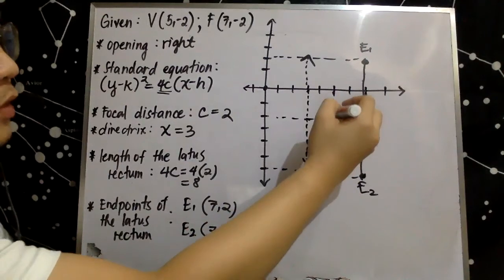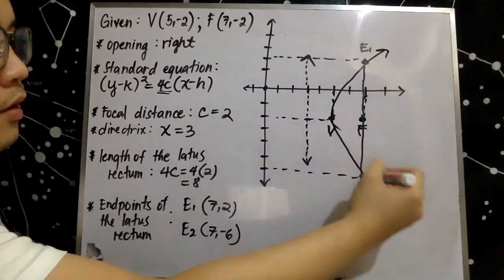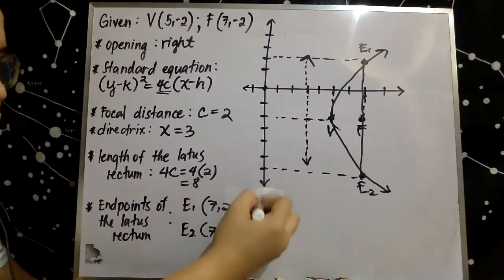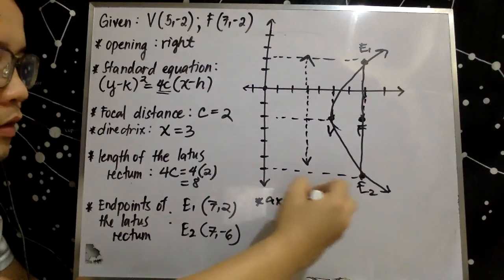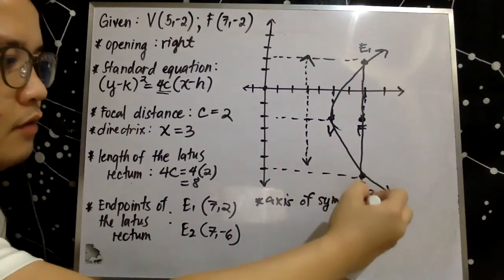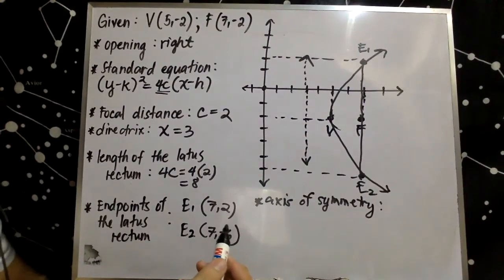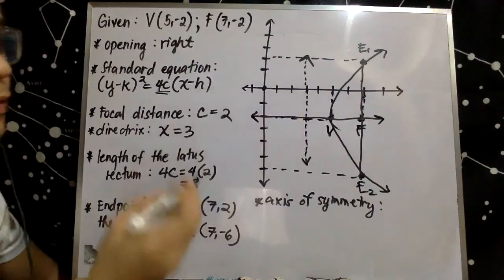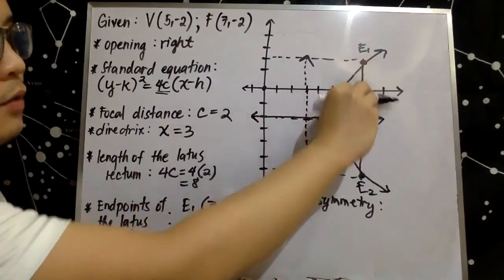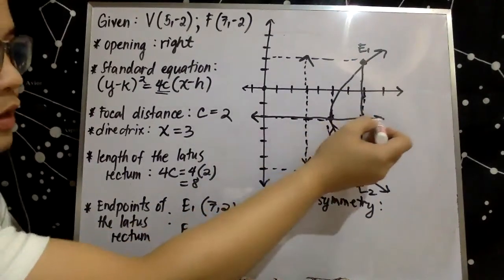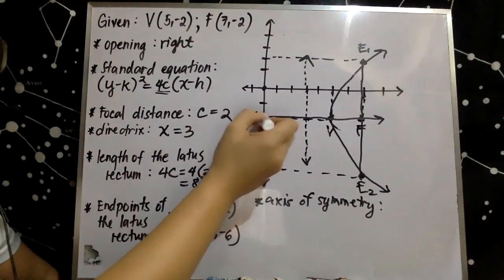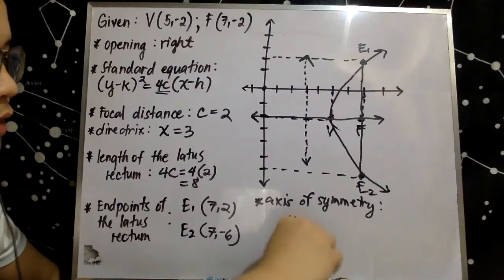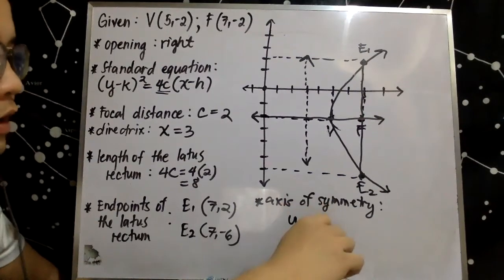If we sketch our parabola, this is our parabola that opens to the right. The next thing we need to determine is the axis of symmetry. The axis of symmetry is a line that divides the parabola into two equal parts, and this line passes through the vertex and focus. The upper portion of the parabola equals the lower portion, and our axis of symmetry intersects the y-axis at this value. So the equation of the axis of symmetry is y equals negative 2.